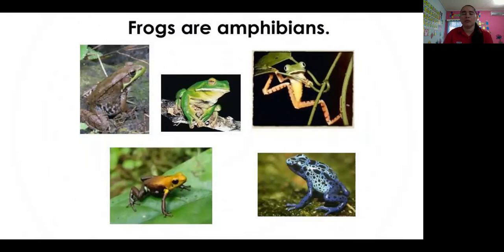We have frogs that are amphibians. We have different types of frogs and colors. You can see here — colors like blue, yellow, green, brown and green.